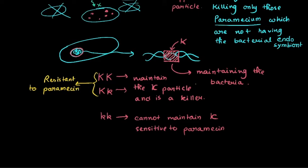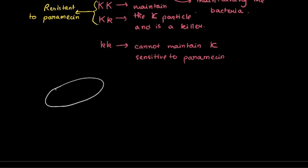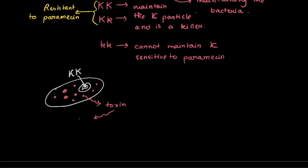If the paramecium has the K gene in homozygous dominant condition inside the nucleus, it can maintain the kappa particles in the cytoplasm, and it can secrete the paramecin toxin, which kills the paramecium in its vicinity if they are not containing the kappa particle. Similarly, if the condition is heterozygous, it can also maintain the kappa particles and secrete the toxin, giving it the killer phenotype.